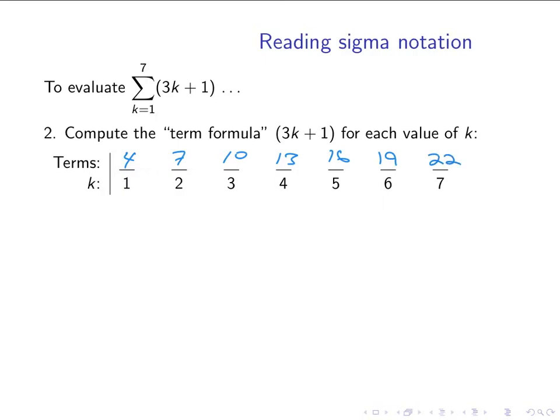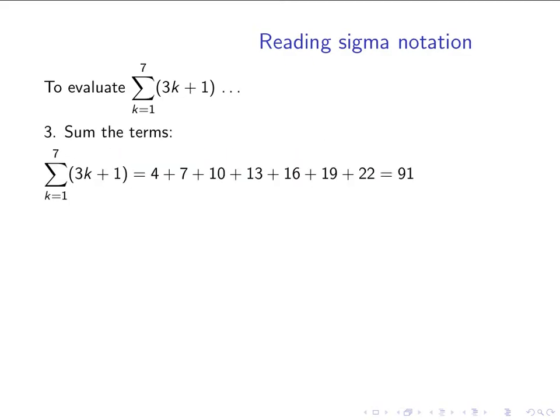So that's step 2, is to evaluate what the terms are. And then step 3 is simply to add them together. So sometimes sigma notation is called summation notation because the result of evaluating a sigma expression is always a sum. So in this case, we would have the sum of the numbers 4 plus 7 plus 10 up to 22. And we could do that a couple of different ways, but the result for that will be 91.